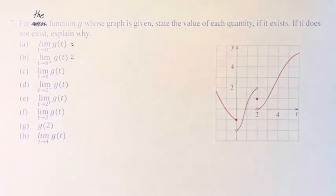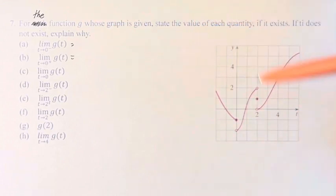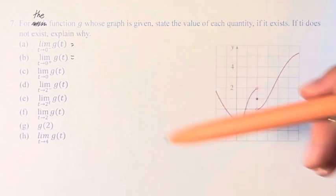Hello and welcome back to another video. In this problem, we're asked for the function g whose graph is given, state the value of each quantity if it exists. If it does not exist, explain why.